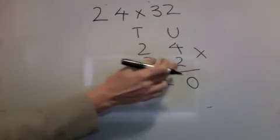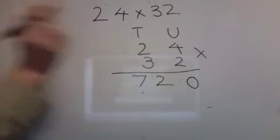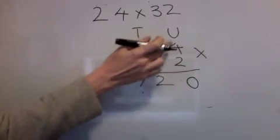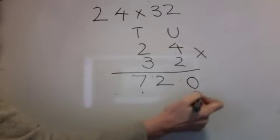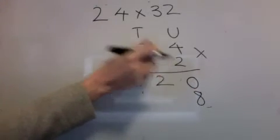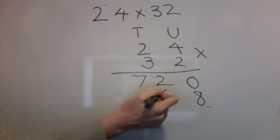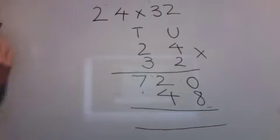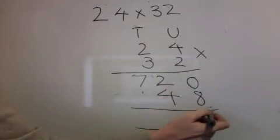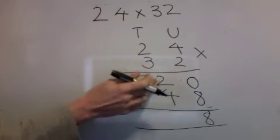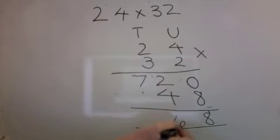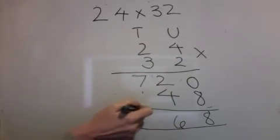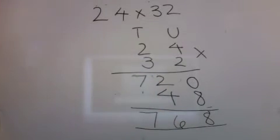Now I'm going to multiply by the 2. Units first: 2 times 4 is 8. 2 times 2 is 4. Add them together: nothing add 8 is 8. 4 add 2 is 6. 7 add nothing is 7. 768.